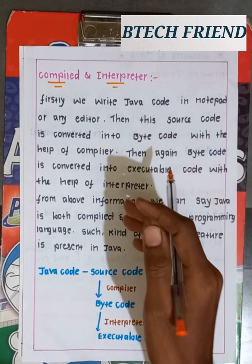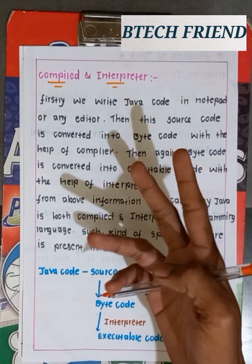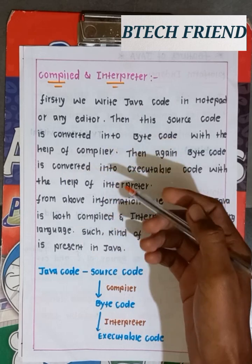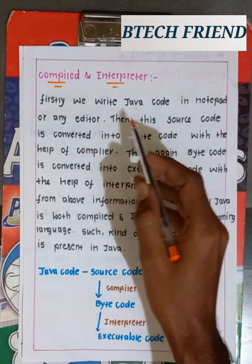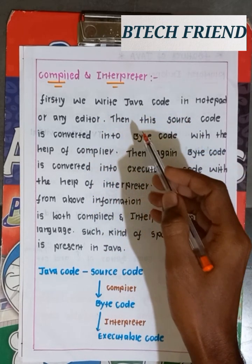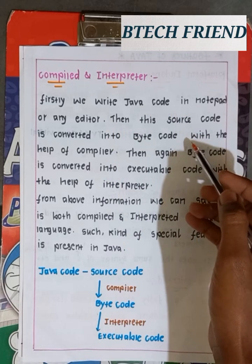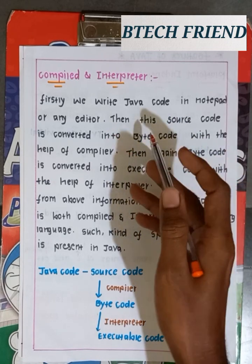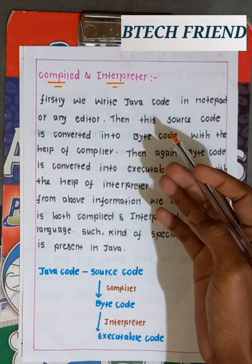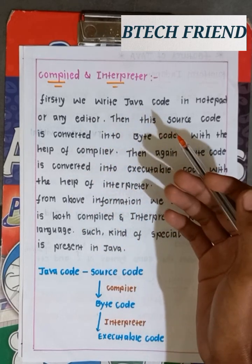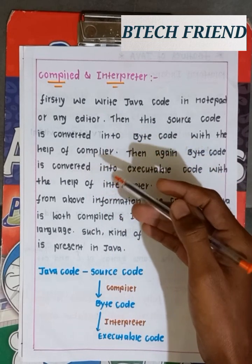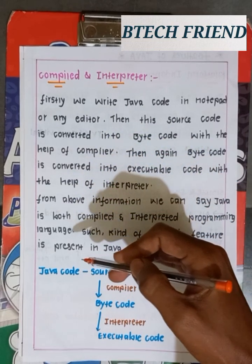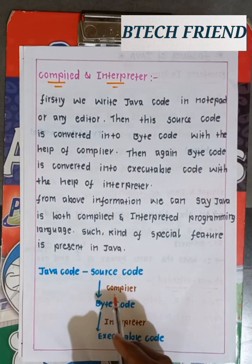The next feature is that Java is both compiled and interpreted. There are two steps in Java: compilation and then interpretation. First, we write Java code in Notepad or any editor. Then this source code is converted into bytecode with the help of a compiler.